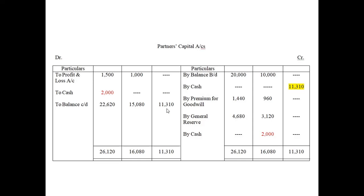If no specific method for adjustment is mentioned in the question, you adjust through cash or bank. If it specifically says to open a current account, you open one. Here, C brings in his share of capital 1,130, and B brings in extra cash. Writing 'By Cash' appears twice — once for C and once for B — so I've written them separately to make it clear.